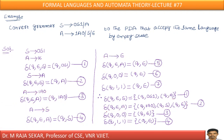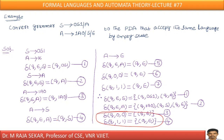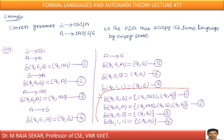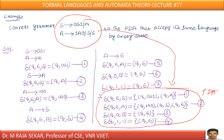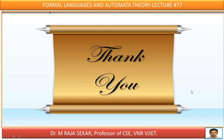Now we have completed the conversion. These transitions — productions 1 through 4 — form the corresponding PDA for this context-free grammar. This CFG has been successfully converted into a pushdown automata. Thank you.